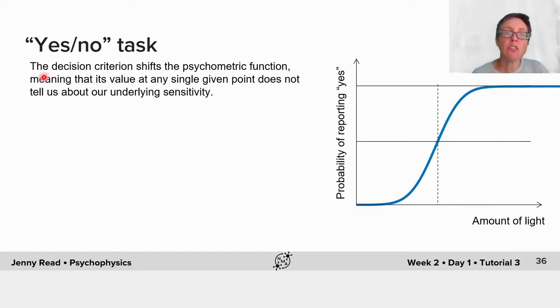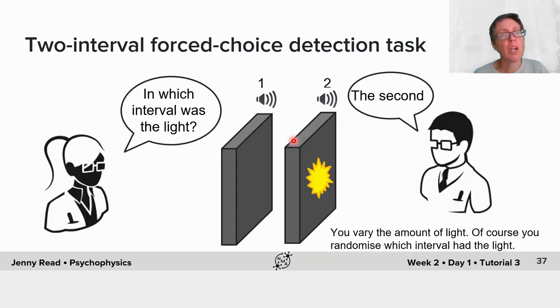The decision criterion is shifting the psychometric function left and right. That means that its value at any single given point doesn't tell us anything about the underlying sensitivity.